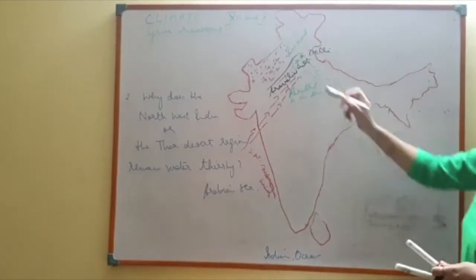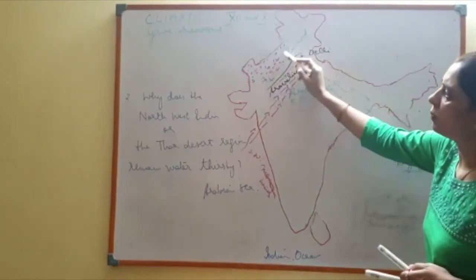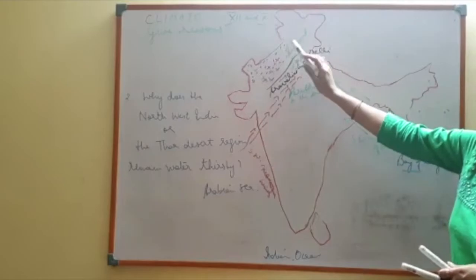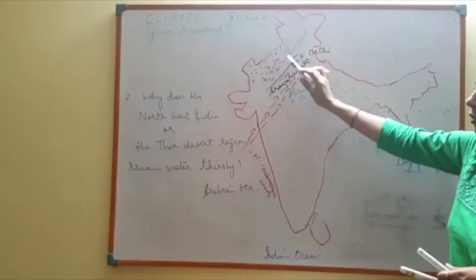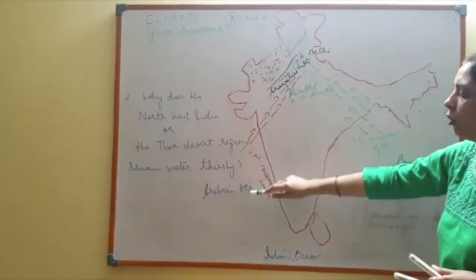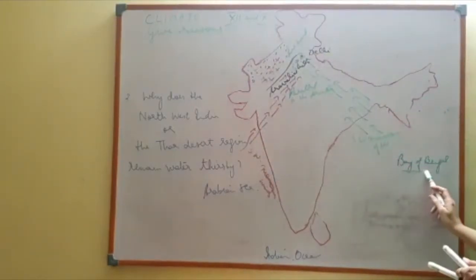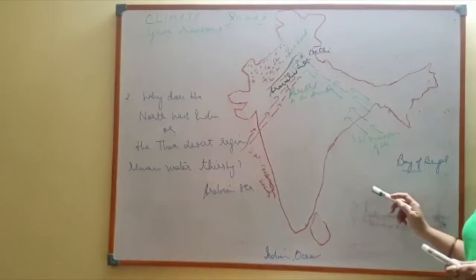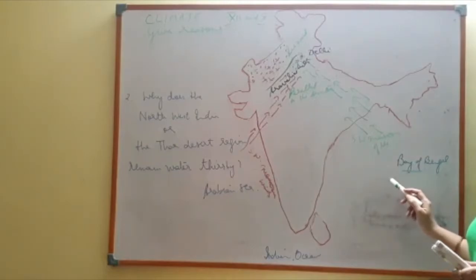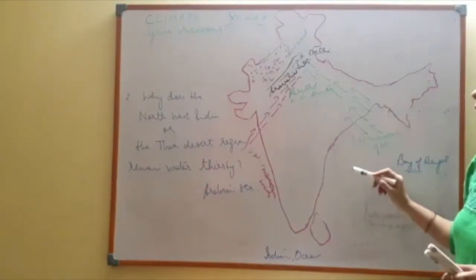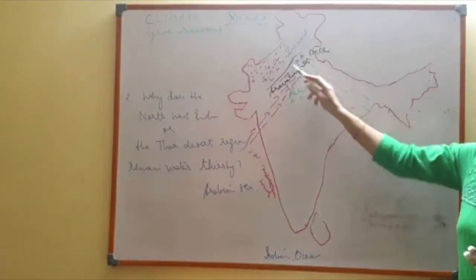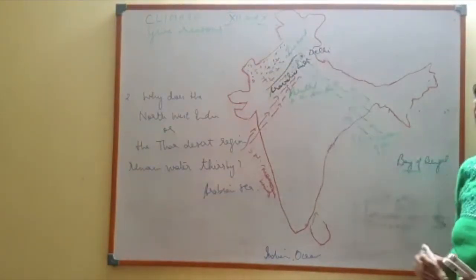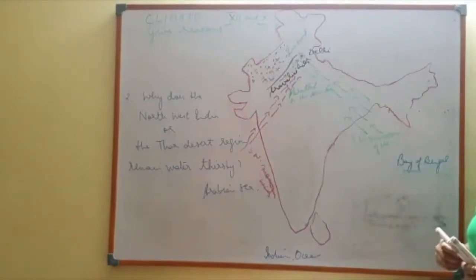So the Northwestern part or the Thar Desert remains dry because both branches of the monsoon — the Arabian and the Bay of Bengal branch — do not bring rains to the leeward side of the Aravallis.